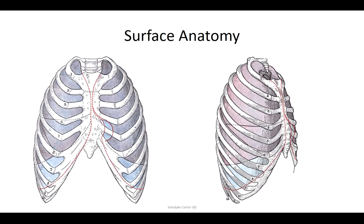Eight, ten, twelve — that's the rule of twos. Looking at the inferior-most projection of the lung: anteriorly it extends as far as rib six, laterally as far down as rib eight, and posteriorly rib ten. So from anterior to posterior, the costal diaphragmatic recess is essentially two rib segments wide.